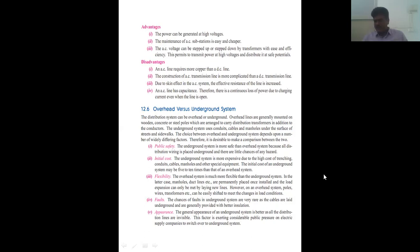The distribution system can be overhead or underground. The overhead line is generally mounted on wooden, concrete, or steel poles and arranged to carry distribution transformers in addition to conductors. The underground system uses cables laid under the surface of streets and sidewalks.